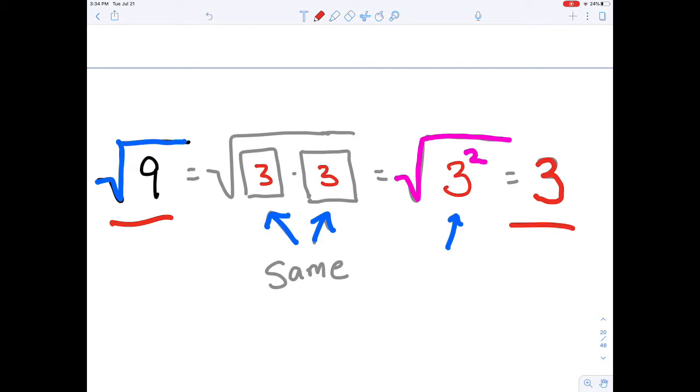Now, math purists out there might say that that is something called the principal square root, and they're correct. Technically speaking, the square root of 9 has two solutions, positive 3 and negative 3, because positive 3 times positive 3 equals 9, and negative 3 times negative 3 equals 9 as well.